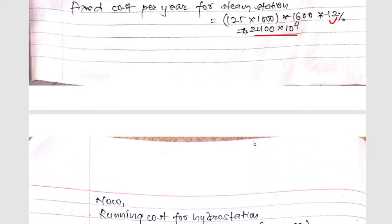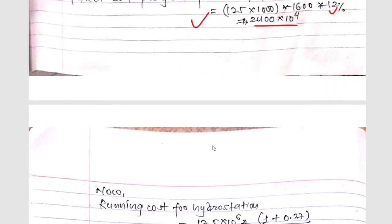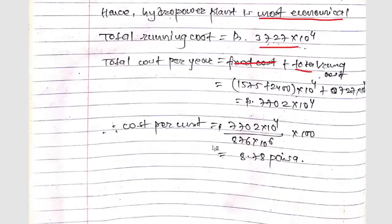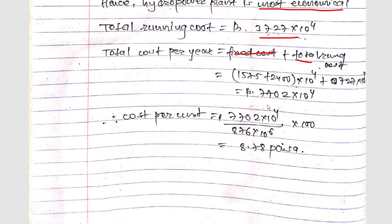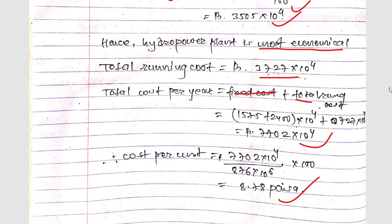The total cost per year for the combination is fixed cost plus total running cost = 7702×10⁴ rupees. Therefore, cost per unit = (7702×10⁴ × 100) / (876×10⁶) = 8.78 paisa per unit. Comparing all four alternatives: steam = 9.4p, nuclear = 10.15p, hydro = 6.07p, and combination = 8.78p. The hydro power plant alone is the most economical. Hope you enjoyed the lecture — thanks for watching and please subscribe to the channel.